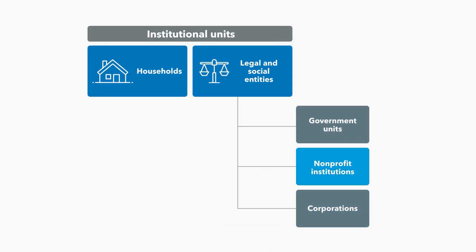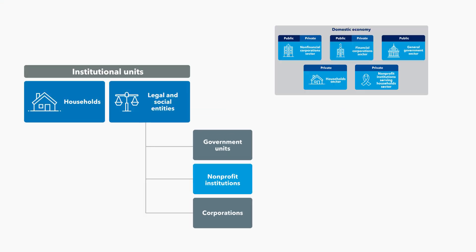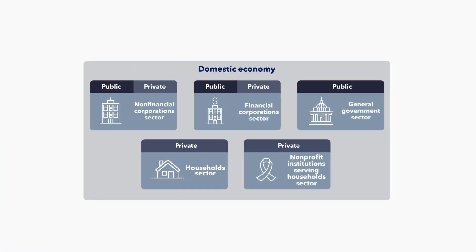Non-profit institutions. Non-profit institutions may engage in market or non-market activities and they may be created by households, corporations, or governments. Depending on what they do and who controls them, they can be classified as government units, financial or non-financial corporations, or a special category called non-profit institutions serving households. We classify non-profit institutions that qualify as corporations and that are directly or indirectly controlled by government units as public corporations.